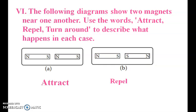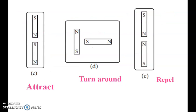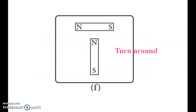Diagram C: opposite poles — attract each other, north and south. Diagram D: turn around — iron. Diagram E: same poles, so they repel. Diagram F: turn around — you can see a turn-around iron.